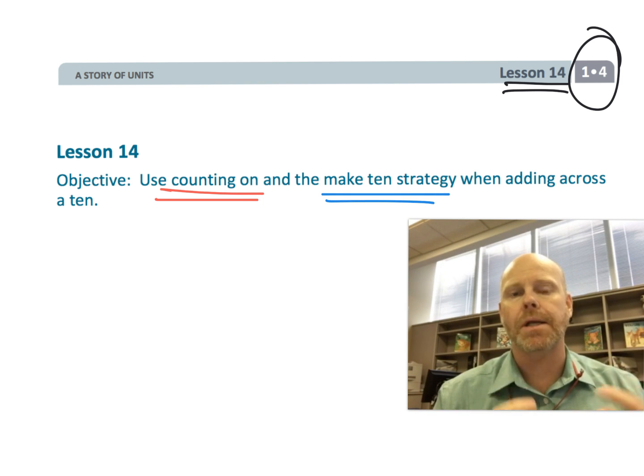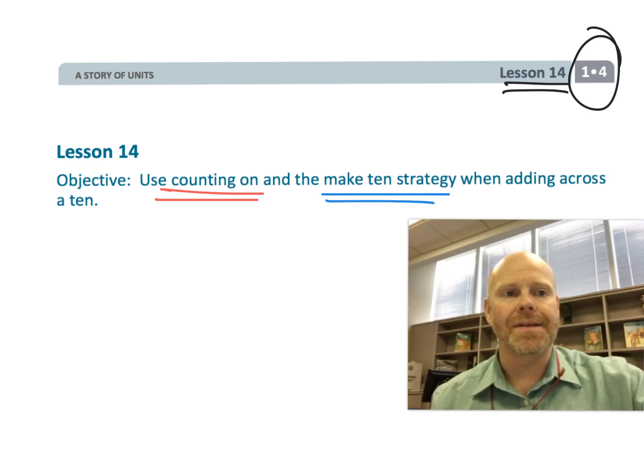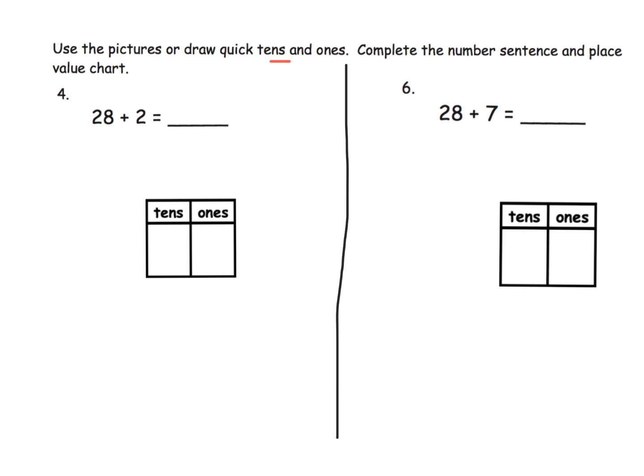So let's get started. Here it says to draw the quick tens and ones and then complete the number sentence and fill in, of course, that place value chart. Alright, so first thing we're going to do, and really this is largely the count on method.